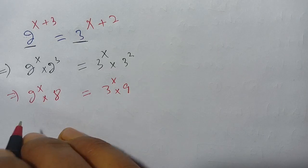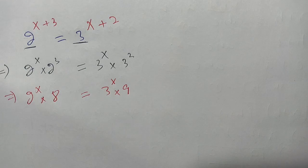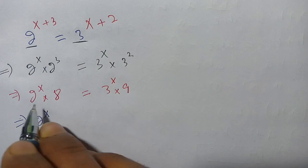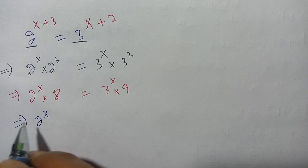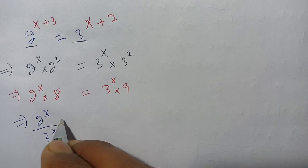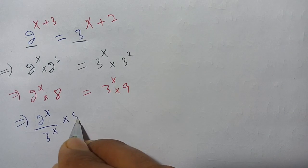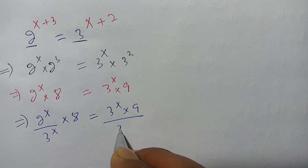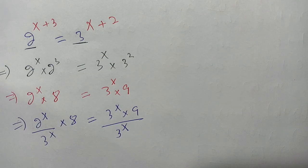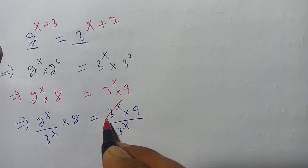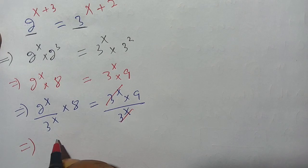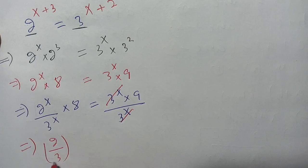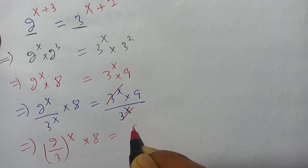Now on the next step, we can write this as 2 power x over 3 power x. Dividing both sides by 3 power x, we get 3 power x times 8 equals 9 times 3 power x. The 3 power x terms cancel out, and on our left hand side it becomes (2 divided by 3) whole power x times 8 is equal to 9.